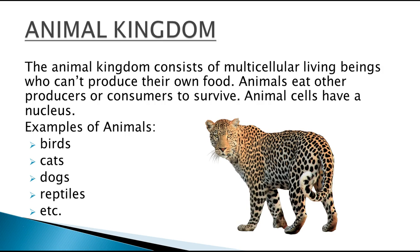Animal kingdom. The animal kingdom consists of multicellular living beings who cannot produce their own food. Animals eat other producers or consumers to survive. Animal cells have a nucleus. Some examples of animals are birds, cats, dogs, reptiles, and others.